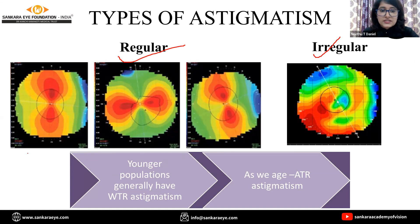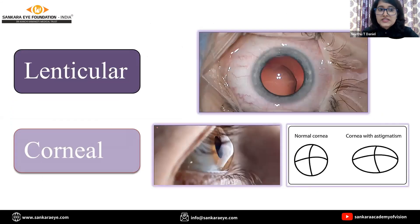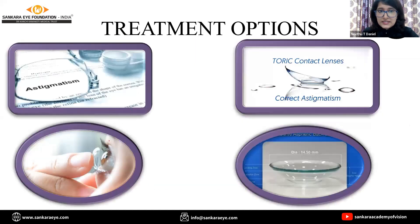Younger populations generally have with-the-rule astigmatism. As we age, it becomes more towards against-the-rule astigmatism. Based on etiology, we have basically lenticular astigmatism and corneal astigmatism. The easiest form is lenticular astigmatism, which can be tackled easily by removing the lens. The more complexities occur when it comes to corneal astigmatism, which we'll deal with in the later slides.